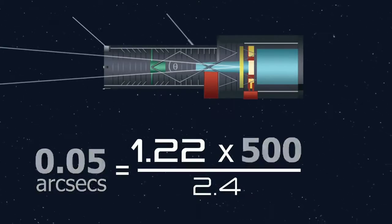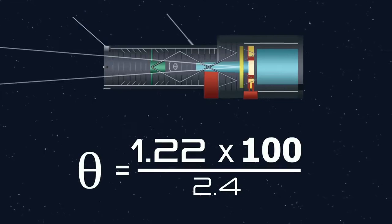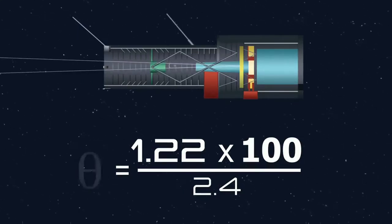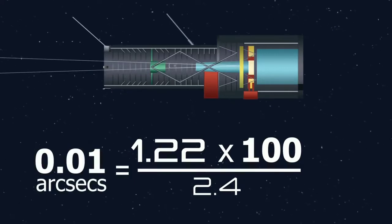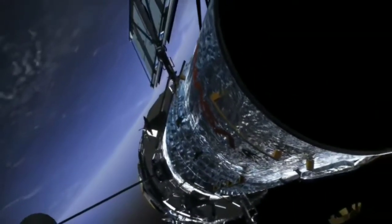For even shorter wavelengths, like ultraviolet, the resolution gets even better. And Hubble can achieve an angular resolution as low as 0.01 arc seconds.